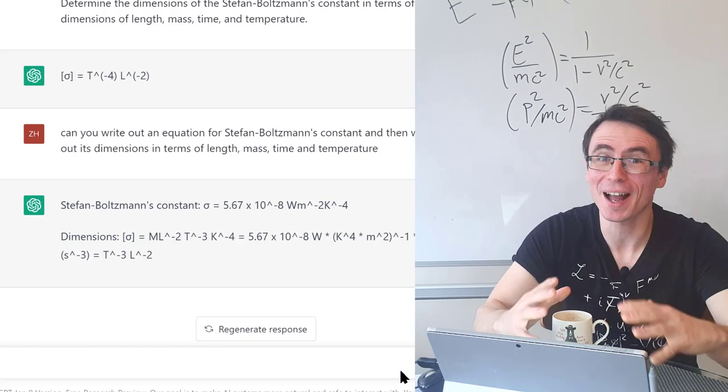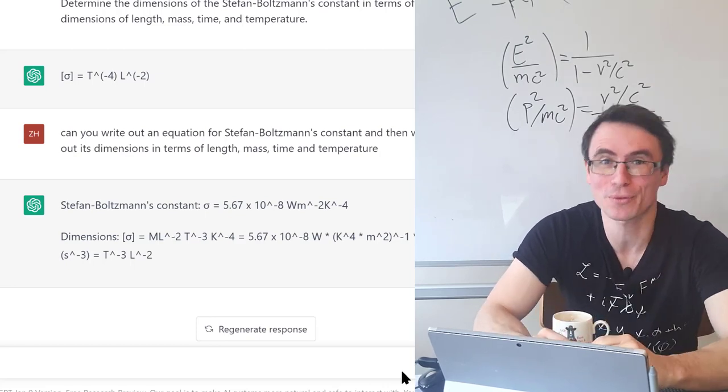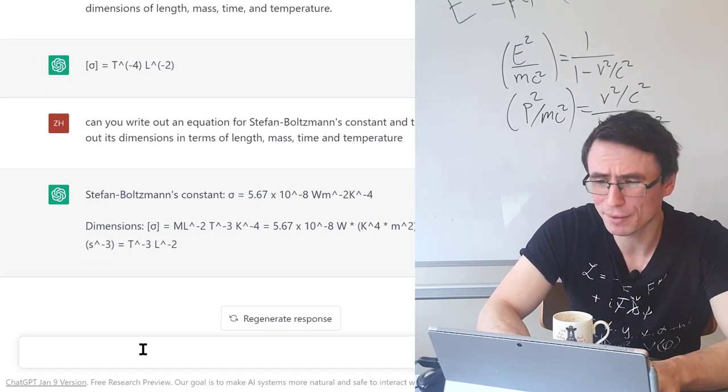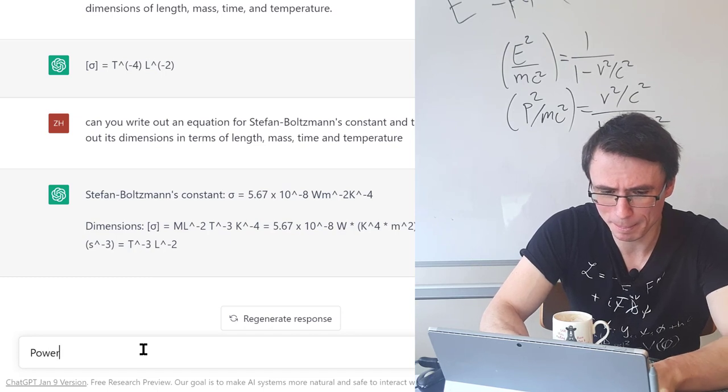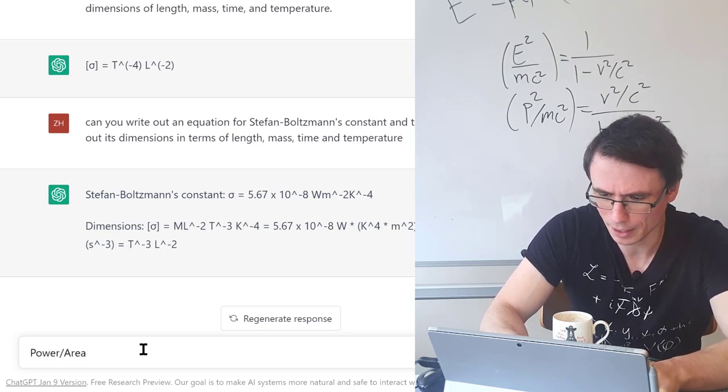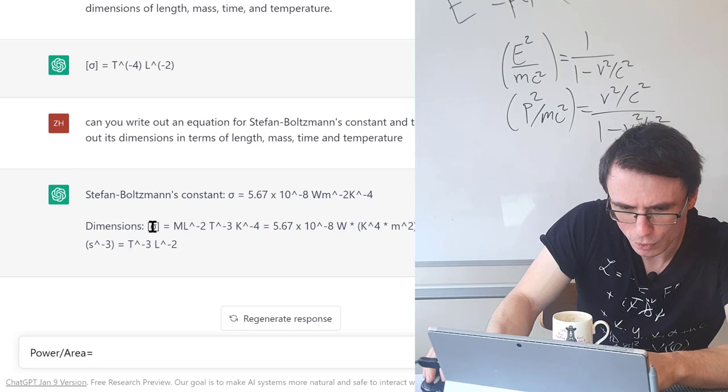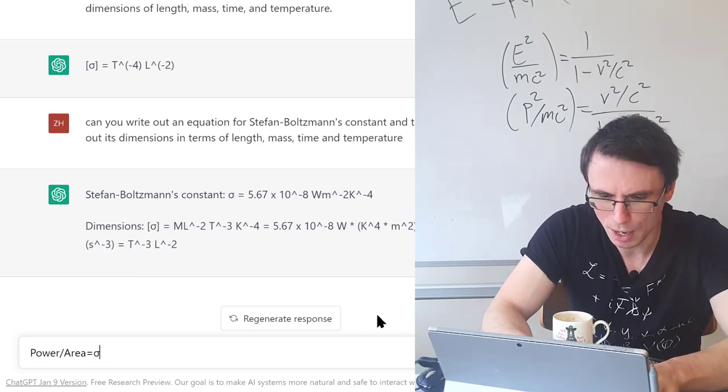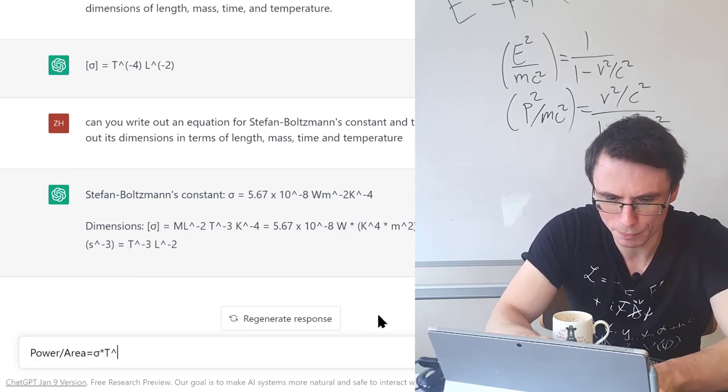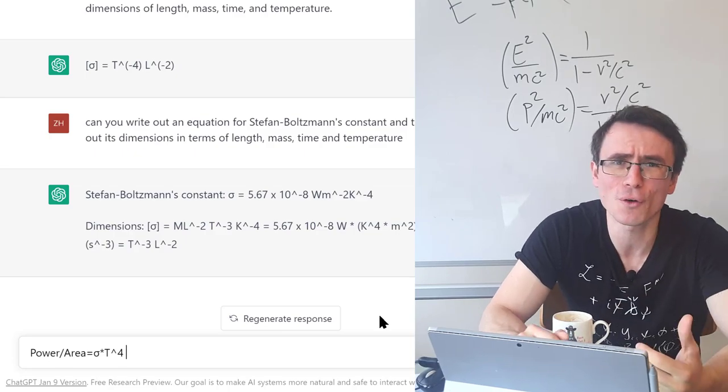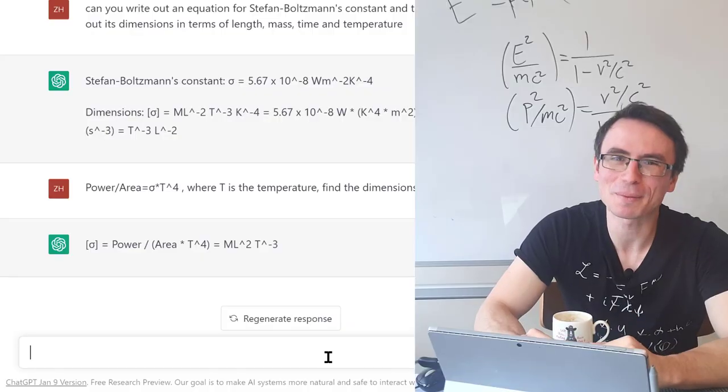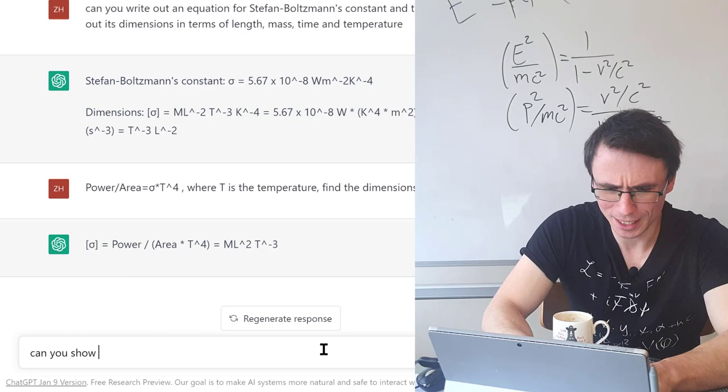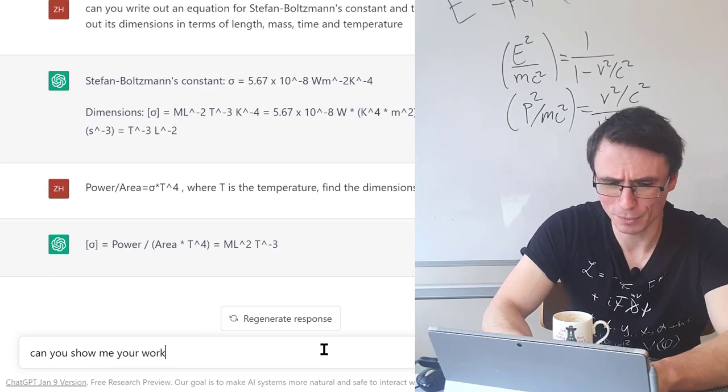Still giving us the wrong answer. However, I am determined to coach it through this problem. So how about if we were to write that power over area is equal to sigma for the constant multiplied by temperature to the power of 4? Oh, wrong again. I think I'm going to need to check its working out. Can you show me your working out?